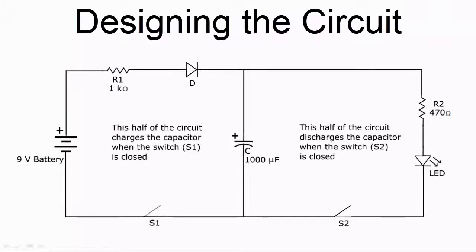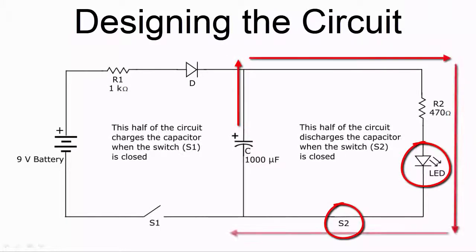When S2 is closed, the capacitor starts to discharge its stored energy, which illuminates the LED. When the capacitor is fully discharged, current stops flowing and the LED is no longer illuminated.